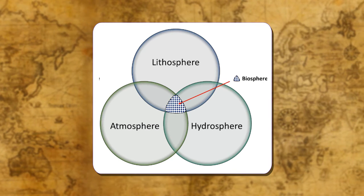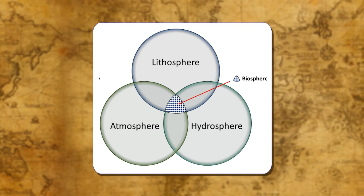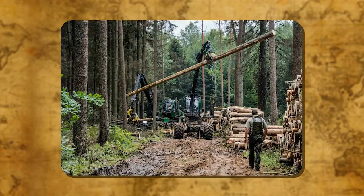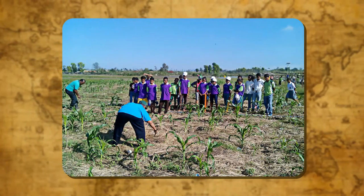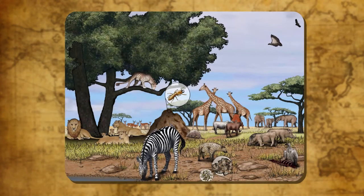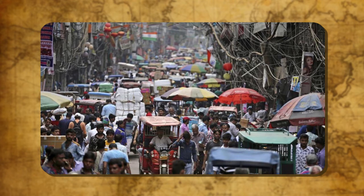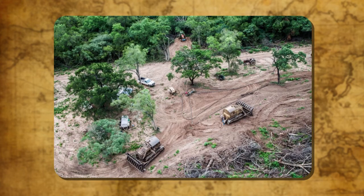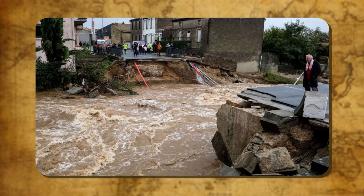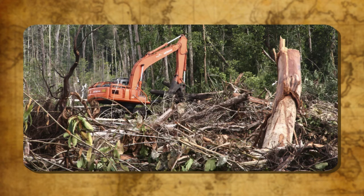The three domains of the earth interact with each other in some way or the other. For example, cutting of forests for fulfilling our needs of wood or clearing land for agriculture may lead to fast removal of soil from slopes. The presence of both animals and plants helps to keep a balance over the earth's surface. But due to the greedy attitude of human beings, this balance is being disturbed. The ever-growing population needs more space to live, and thus human beings are clearing forests by cutting trees and making room for settlements. This causes soil erosion and floods which destroy lives and property of people. The destruction of forests also disturbs the natural habitat of wildlife.